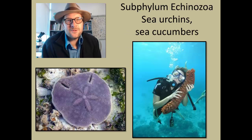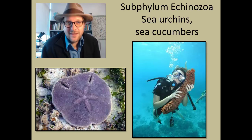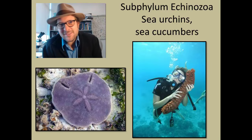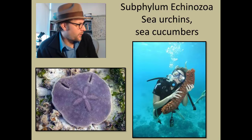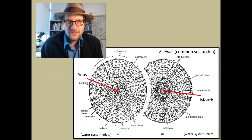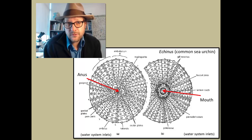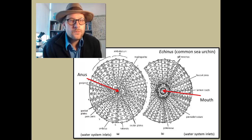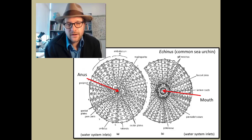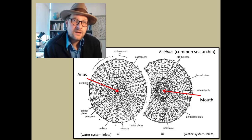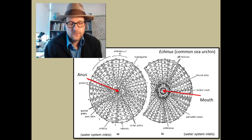The Echinozoa include the sea cucumbers and sand dollars — let's face it, they are cute and cuddly, if not pokey. Animals that closely resemble the common sea urchin have a very extensive fossil record. Their skeletons preserve the opening for the mouth near the sea floor, surrounded by gill notches, and an anus above surrounded by genital openings that release sperm or egg cells.